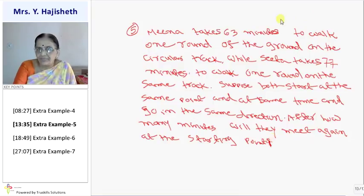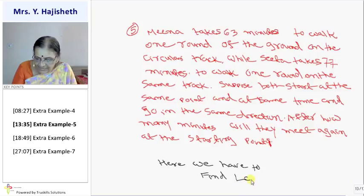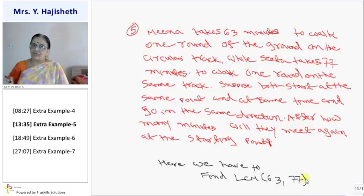Now see, what to do tell me. Here we have done same in text textbook. Same sum we have done in textbook. Here we have to take, have to find LCM of 63 and 77. Yaad hai, maine bola tha, suppose Meena takes x rounds and Sita takes y rounds, to 63 into x is equal to 77 into y is equal to some number, and that number must be equal to LCM. Then you will get how many rounds they have taken.